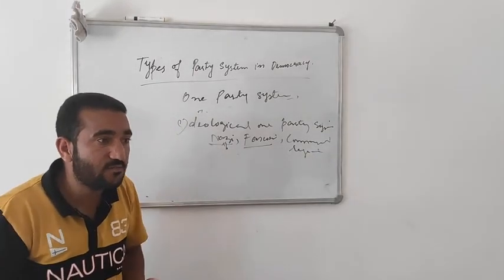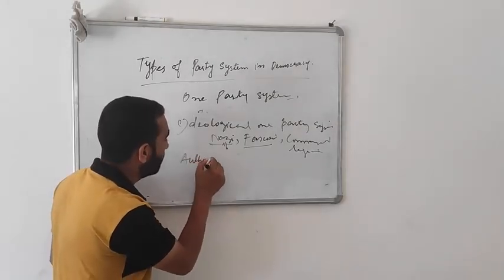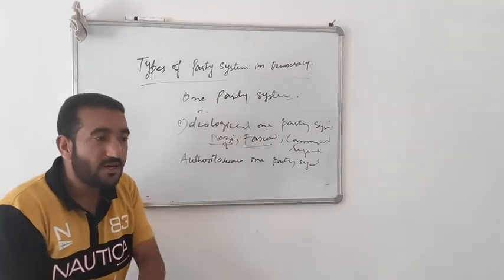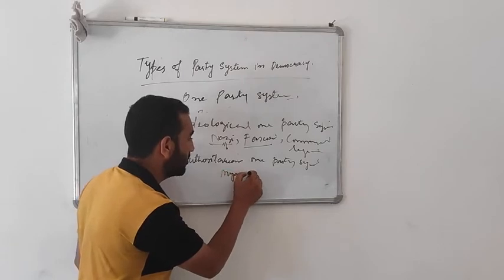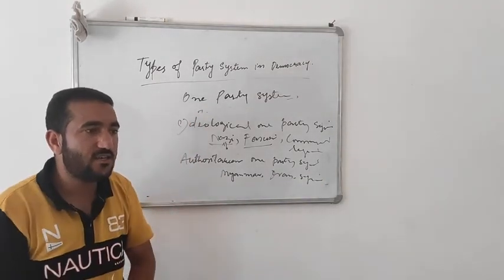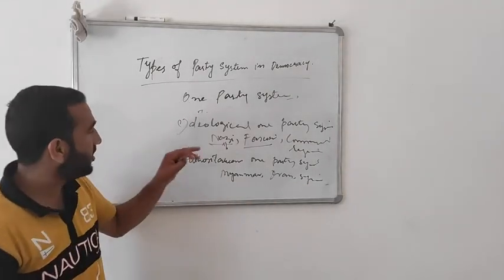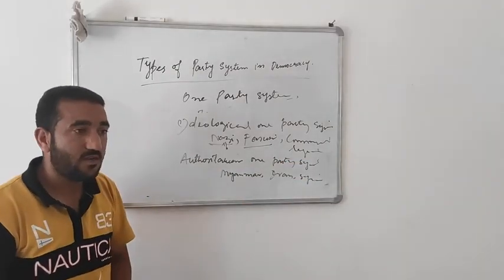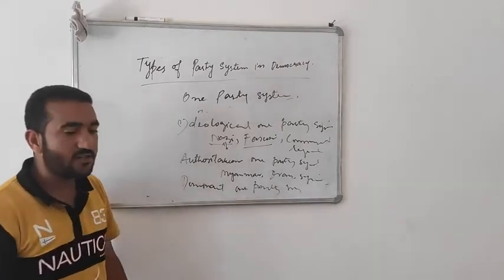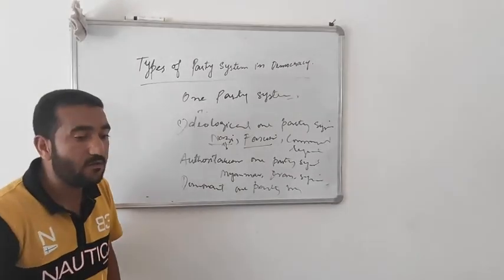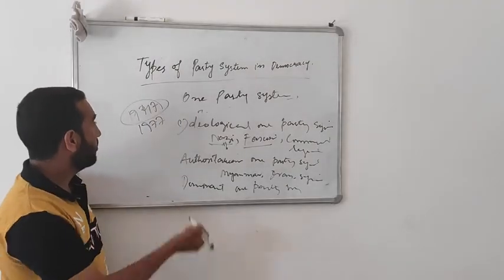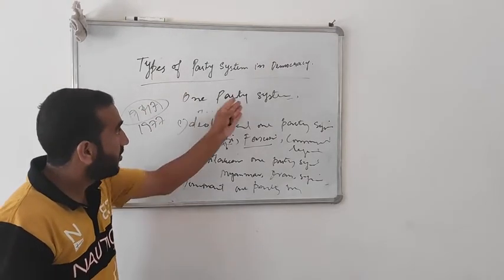The second type is the authoritarian one-party system. Examples include Myanmar, Iran, Syria, Egypt, Ghana, Tanzania, and Kenya. The third type is the dominant one-party system. For example, in India, the Indian National Congress was the dominant party from 1947 to 1977.